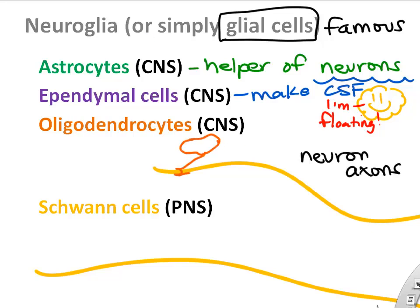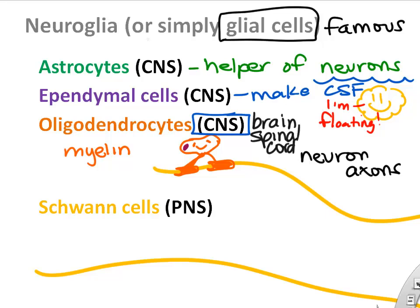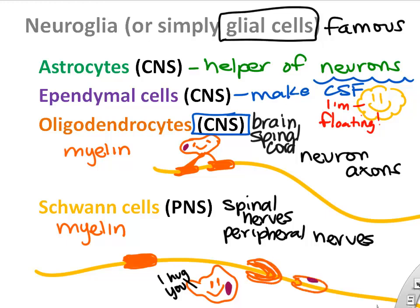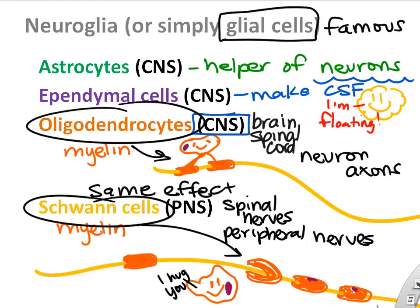Oligodendrocytes and Schwann cells are important helper cells because they wrap the axon with myelin. Oligodendrocytes reach out to axons in the brain and spinal cord, wrapping them with myelin. In the peripheral nervous system, Schwann cells each hug a portion of a peripheral axon and wrap around it, layering myelin to insulate the axon — the same effect as oligodendrocytes. Oligodendrocytes are found only in the central nervous system.